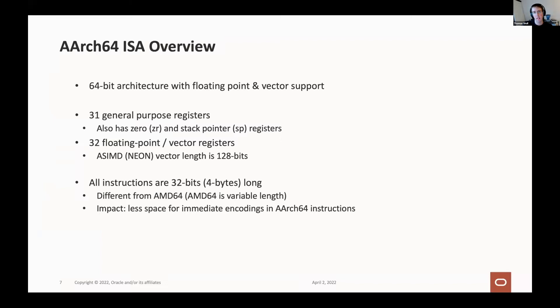In terms of the main characteristics of the AArch64 ISA: it's a 64-bit architecture with floating point and vector support. There are 31 general purpose registers, 32 floating point/vector registers, a stack pointer register, and a zero register. Currently ARM machines support the Neon vector instruction set, which operates on 128 bits of data at a time. All ARM instructions themselves are 32 bits or four bytes long — this is a key difference from Intel, which has a variable length encoding.